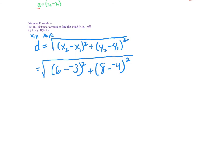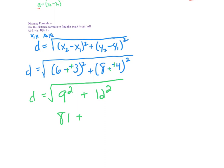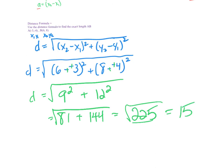6 minus negative 3 is like 6 plus 3, which is 9 squared. Then 8 minus negative 4 is adding, so that's 12 squared. Squaring 9 gives 81, squaring 12 gives 144. Adding those together gives 225, and the square root of 225 is 15. This is another Pythagorean triple: 9, 12, 15. The 15, the longest side, is the hypotenuse.